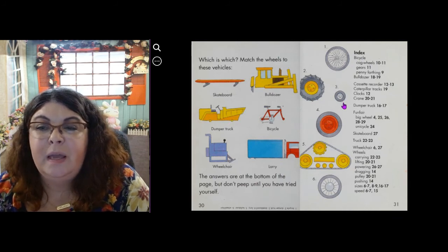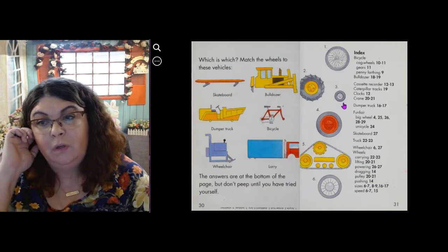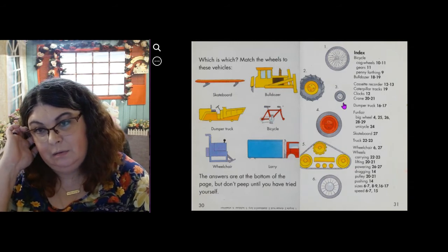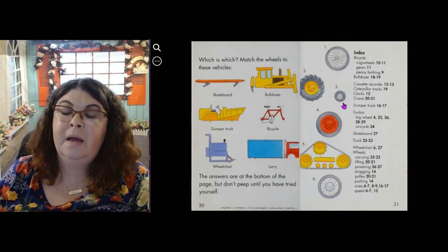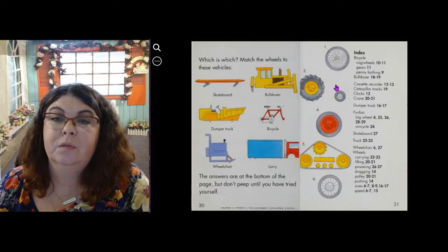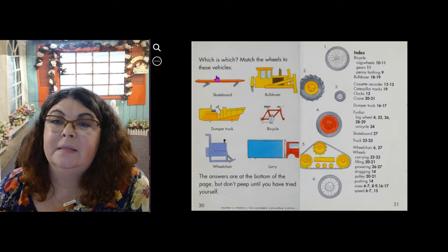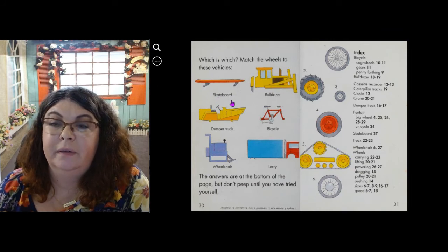How about number three? Number three. It has small wheels. Which one do you think? It has the small wheels. Yes! The skateboard! Very good!